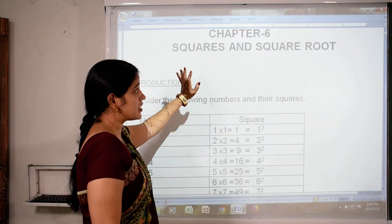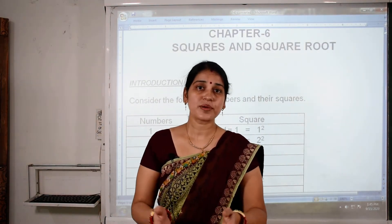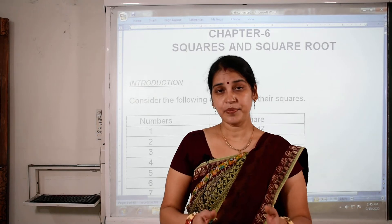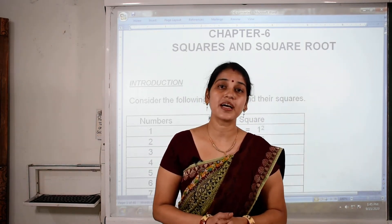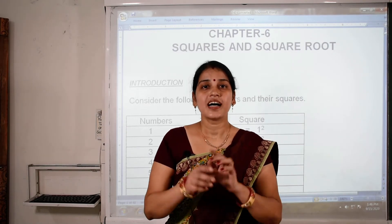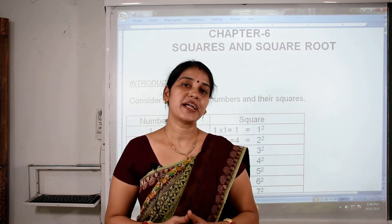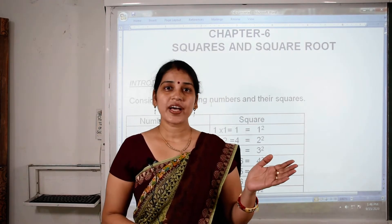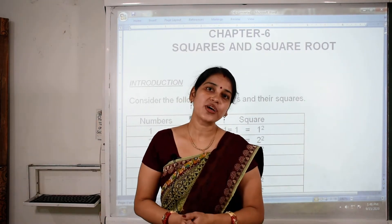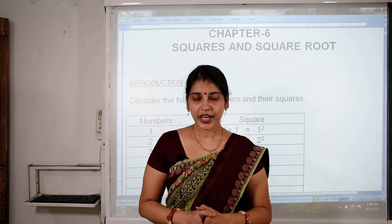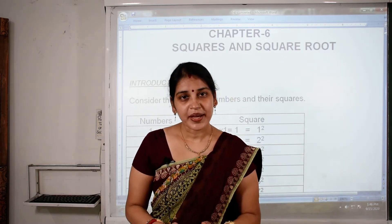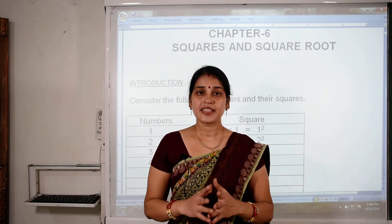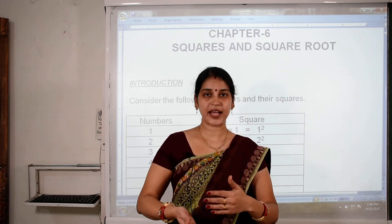As the name of the chapter is Squares and Square Root, the first thing is: what is a square? You have learnt in our previous video about squares in geometry — a square is a four-sided figure made up of four line segments and all four sides are equal. But that square and this square are different. This square you are going to learn in algebra.